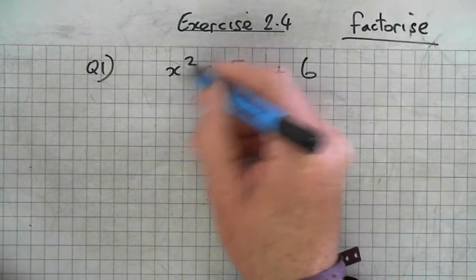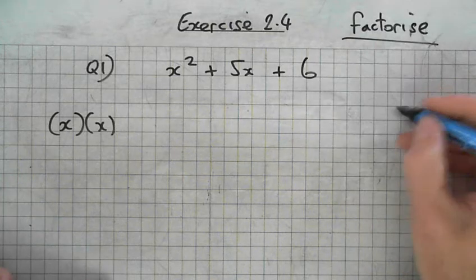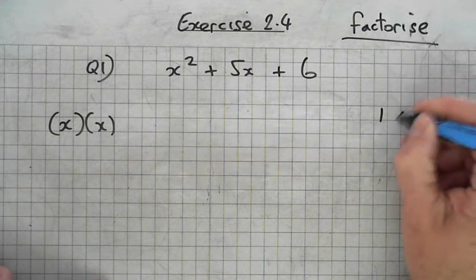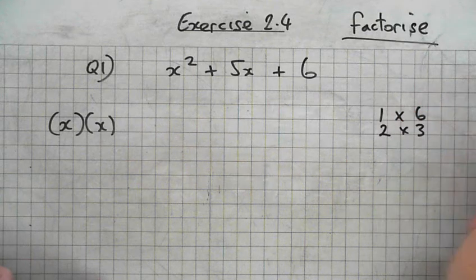First of all, the factors of x squared. So x times x is x squared, isn't it? Now we write down, on the right hand side, we write down the factors of 6. Put your pen down. 1 times 6, 2 times 3.